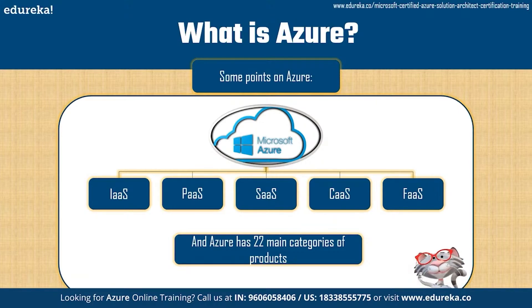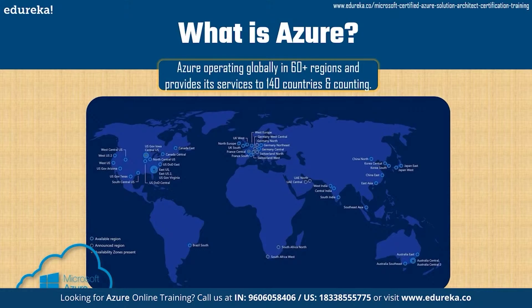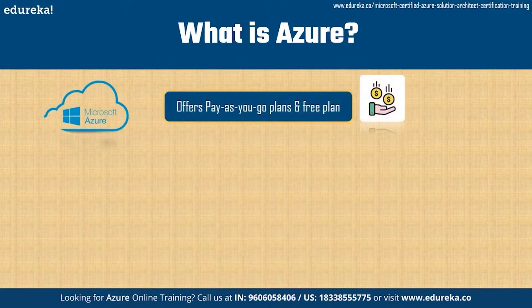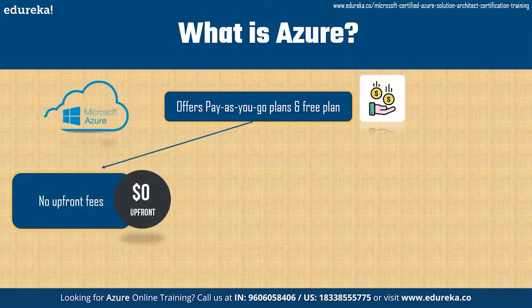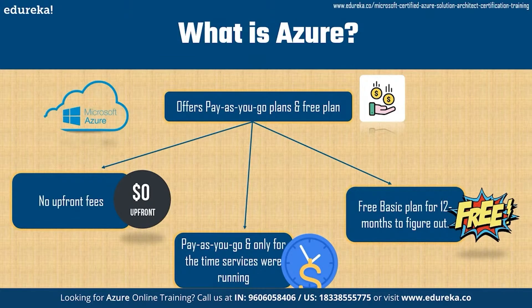Azure has 22 main categories of products, which we will look at shortly. Azure operates globally in 60-plus regions and provides services to 140 countries and counting. Just like major cloud platforms, Azure provides pay-as-you-go plans and a free plan — no upfront fees for signing up, and you only pay for the time your services are running. Azure also provides a free basic plan, which is surprisingly good and valid for 12 months.